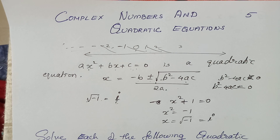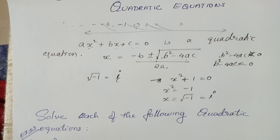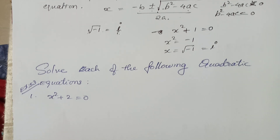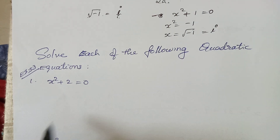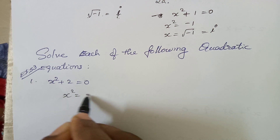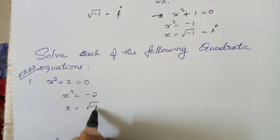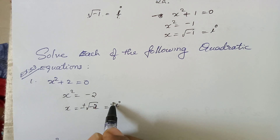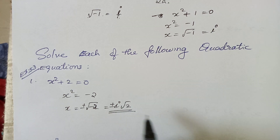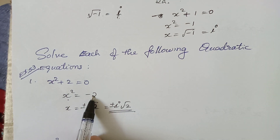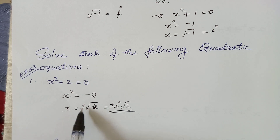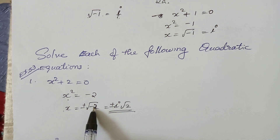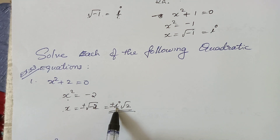We are going to solve quadratic equations. For example, x squared equals minus 2, so x equals root of minus 2, which is plus or minus i times root 2, since we separate root of minus 1 as i.